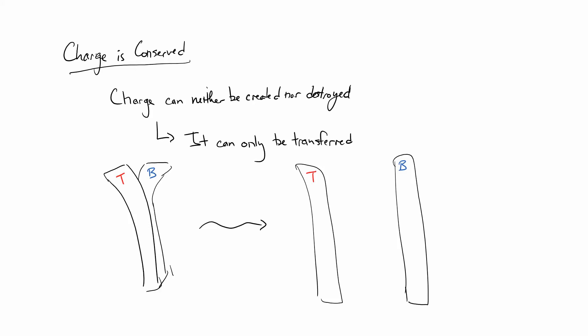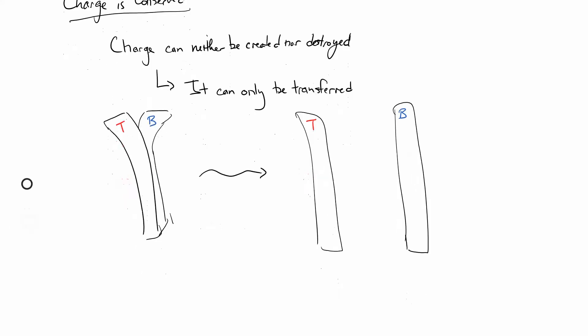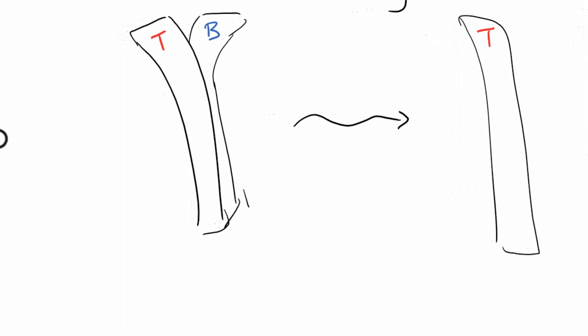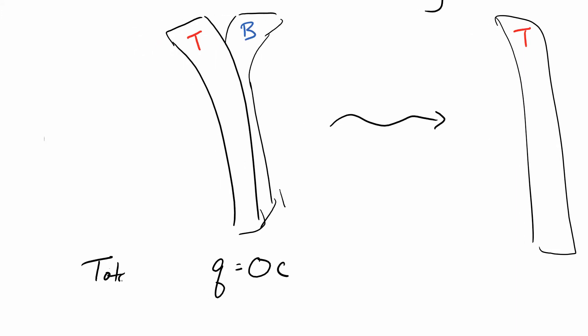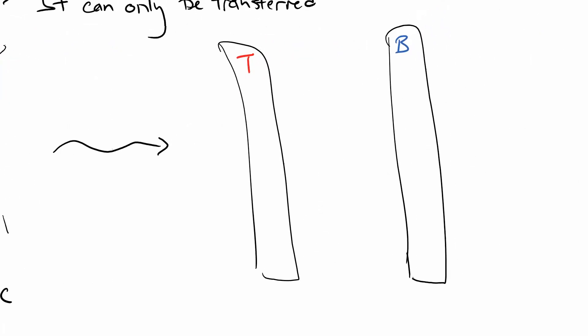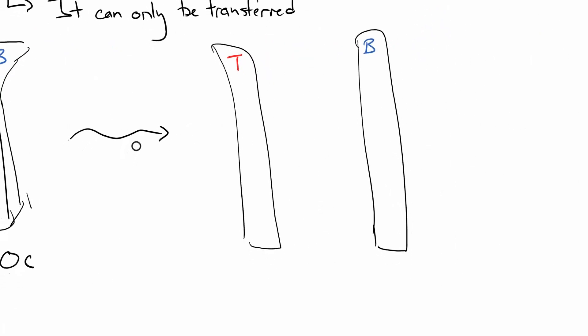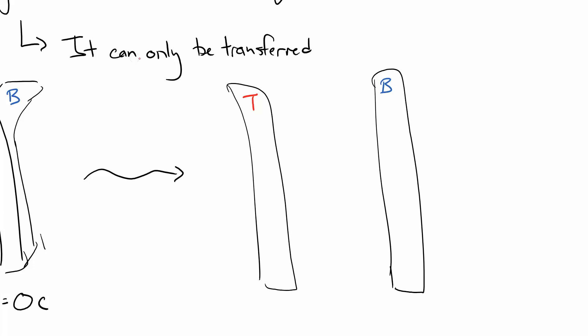If we think back to our tape lab, we had a T-tape and B-tape. When we started, we discharged them — so that means that this combination has no net charge: zero coulombs of charge on the T and B-tape combined.